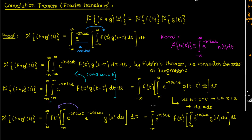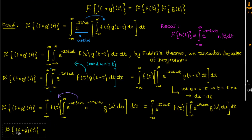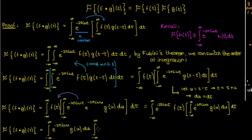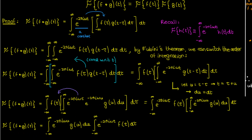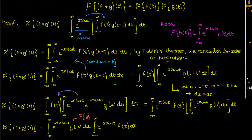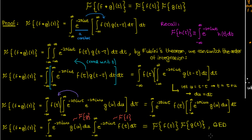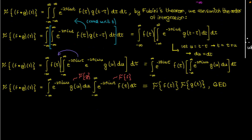Now the inside integral is fully in terms of u and the outside integral is fully in terms of tau. That means the inside integral is effectively a constant with respect to the outside integral, so we can split them up into two integrals multiplying each other. The first integral is then just the Fourier transform of g by definition, and the second integral is just the Fourier transform of f by definition. Since we started with the Fourier transform of the convolution of f and g, we've effectively proven the convolution theorem — that the Fourier transform of the convolution of two functions is the product of their Fourier transforms.